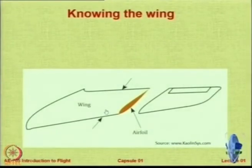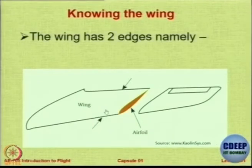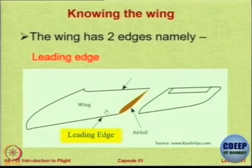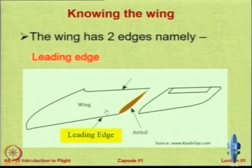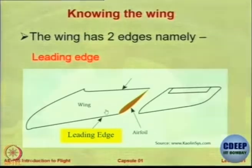The wing has two edges: the leading edge and the trailing edge. The leading edge is the one that hits the air first — it leads. The trailing edge is the one that comes later. If you cut the cross section of the wing, the profile you get is called an airfoil. If you are in the US it is 'airfoil'; if you are in Europe it is 'aerofoil' — they are the same thing.